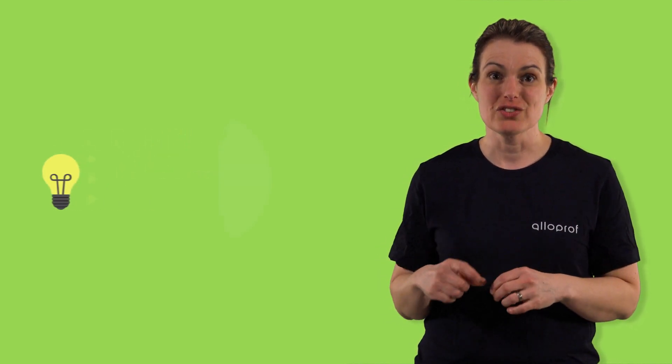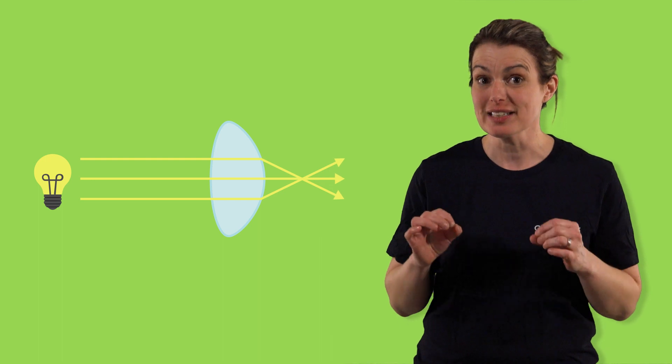To understand vision, let's review what light is. Light is an electromagnetic ray. It travels in a straight line and can be deflected by a lens.